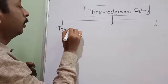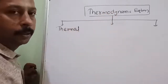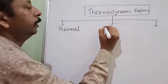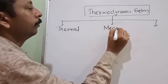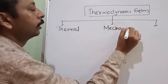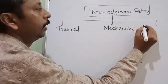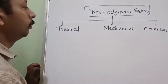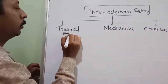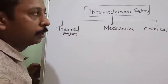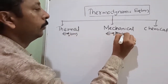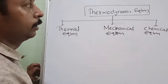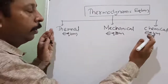The three types are: first, thermal equilibrium; second, mechanical equilibrium; and third, chemical equilibrium. These appear to be very similar words but they are not the same. When all three equilibria coexist, then only we say it is thermodynamic equilibrium.